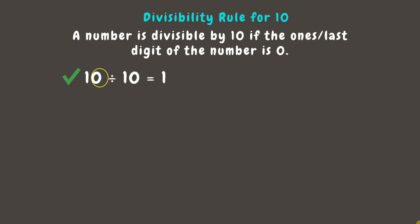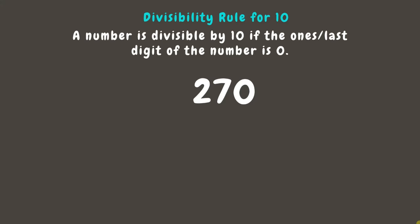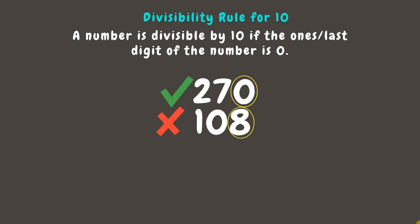Let's have examples. Is 270 divisible by 10? Yes, because its last digit is 0. What about 108? Its last digit is 8 and not 0, so it is not divisible by 10. And 1190 has last digit 0, which means it is divisible by 10.